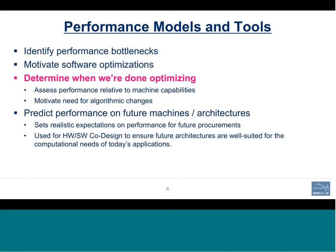So let's start out with a brief introduction. When we think about performance models and performance tools, why are we using them? We want to identify performance bottlenecks that we see in applications and motivate software optimizations to address those bottlenecks. But perhaps most importantly, we want to determine when we're done optimizing. The performance model itself provides a goalpost that says this is where you're done — you're not going to get any better performance from your code by continuing software optimization.